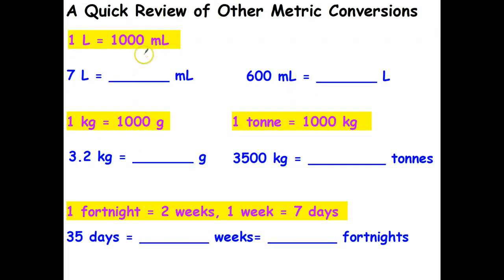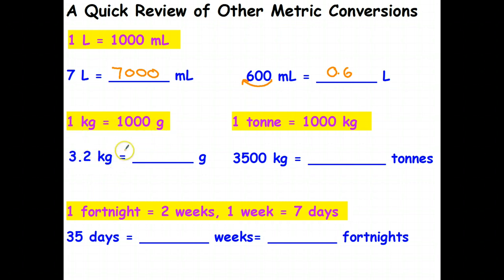Looking at some other metric units: 1 liter is the same as 1,000 milliliters, therefore 7 liters multiplied by 1,000 is 7,000 milliliters. 600 milliliters converted to liters: divide by 1,000, that gives us 0.6 liters. 1 kilogram is 1,000 grams, so 3.2 kilograms multiplied by 1,000 means the decimal point moves three places to the right to give us 3,200 grams.